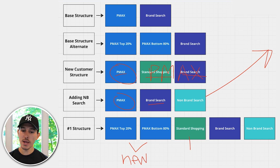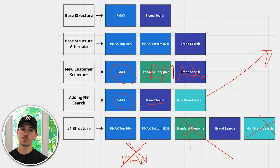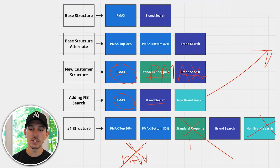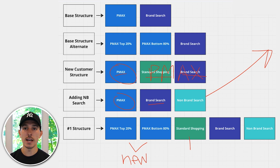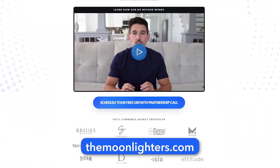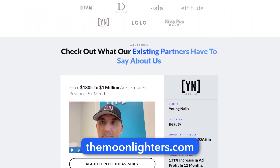If you're only spending $4,000 or $5,000, get rid of non-brand search, standard shopping, and new customer acquisition setup. Focus on where you're at right now, not where you want to go. If you've watched this whole video, you know there are many complexities to this. If you want a professional to manage your account and provide the best structure based on where you are right now, visit themoonlighters.com to apply to work with us today.